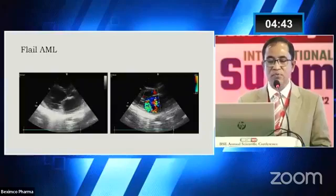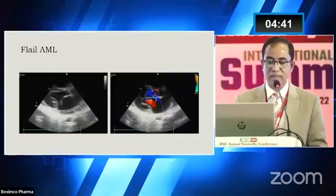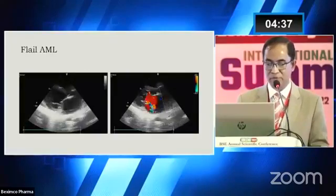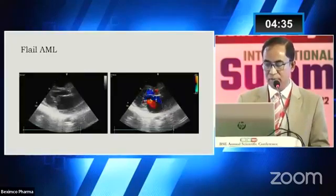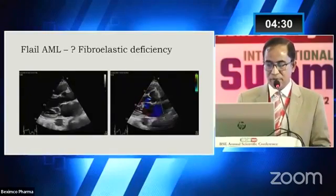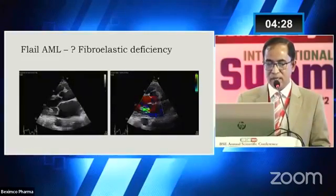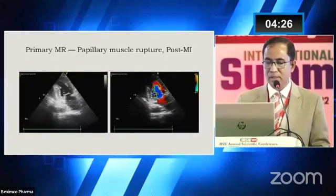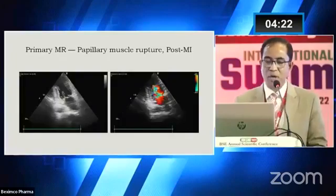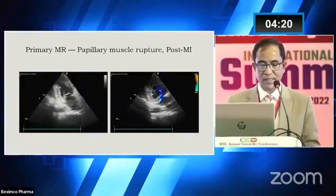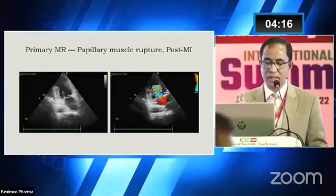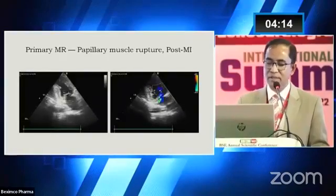This is an example of flail anterior mitral leaflet — you can see that part of the AML is moving within the interior of the left atrium, which is by definition a flail leaflet. This is fibroelastic deficiency leading to flail AML. Sometimes, especially in post-MI patients, there may be papillary muscle rupture, as in this case, where part of the papillary muscle has ruptured, leading to an eccentric severe MR.